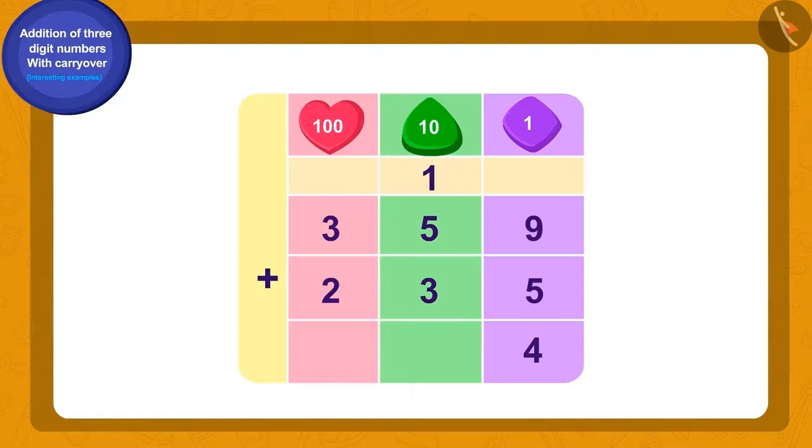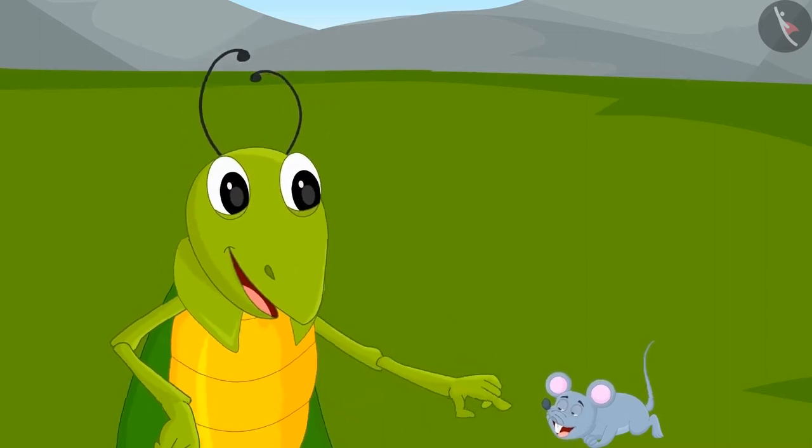Now what is the total of the tens place numbers? 1, 5, and 3—9. Now we will add the hundreds place numbers, 3 and 2, and get 5. Oh wow! This time there were 594 animals in the herd.